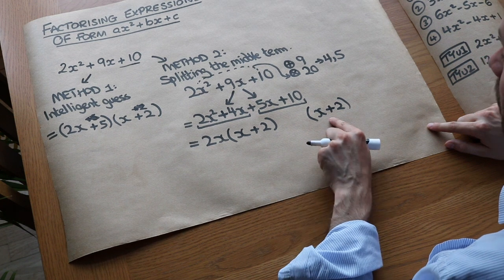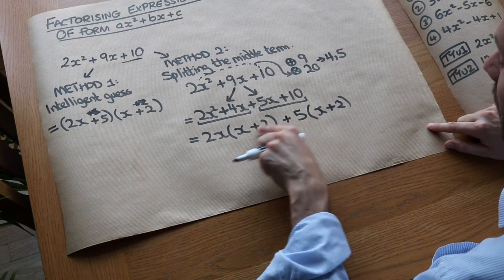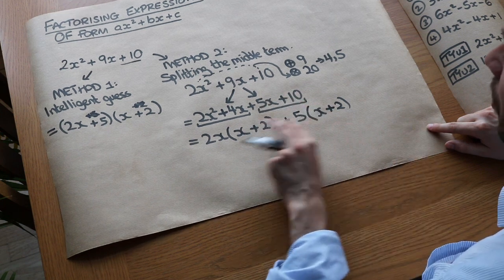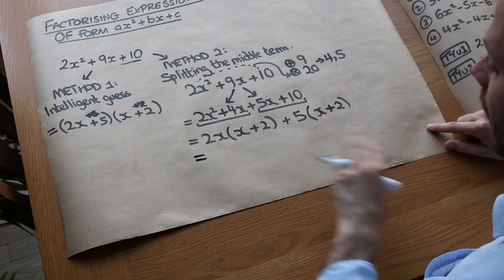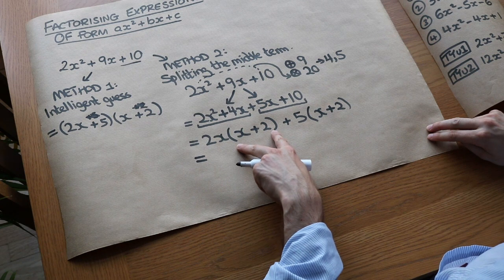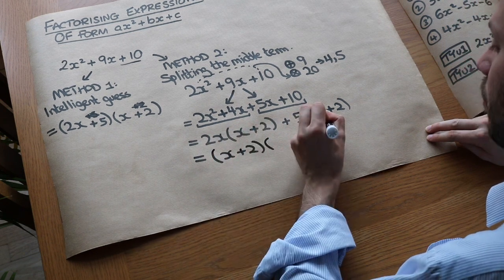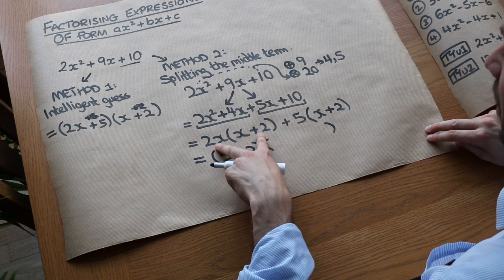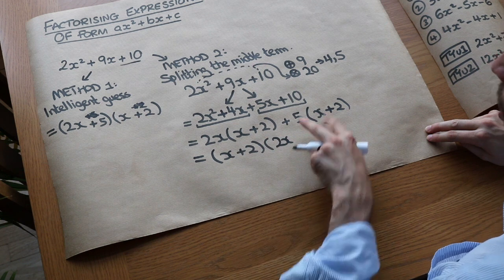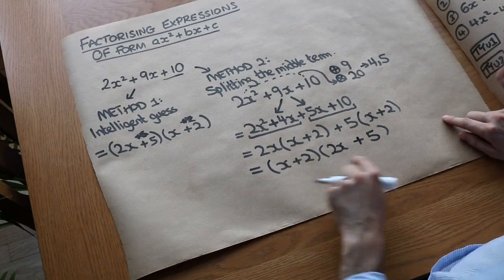We need to think what times X plus 2 gives 5X plus 10 — well it's 5. Make sure you put a plus before it, because you're adding 5 lots of X plus 2. That gives 5X plus 10, which works. Now we've got this expression, and the final step is to see that the whole bracket X plus 2 is common to both terms. So we factorise out X plus 2, and in the second bracket we see what's left: X plus 2 times 2X gives 2X squared plus 4X, and X plus 2 times 5 gives 5X plus 10, so the answer is 2X plus 5 times X plus 2, and we can verify this matches our guessing method.